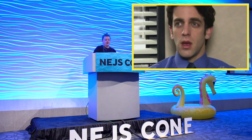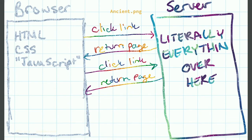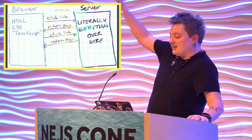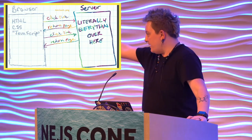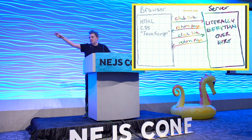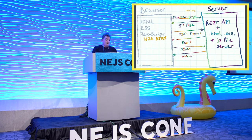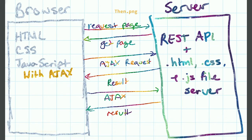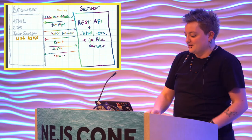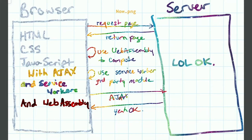I call this ancient.png — pre-AJAX. You've got your browser doing HTML, CSS, and JavaScript. By JavaScript I mean it autoplays MP3s — thanks, MySpace. Then on the server you had literally everything else, and whenever you wanted new data you had to refresh the entire page. Then we have then.png: the browser now has AJAX, we have actual applications where your server becomes more of a REST API. You request a page, get the page back, then make an AJAX request to update a part of the page.